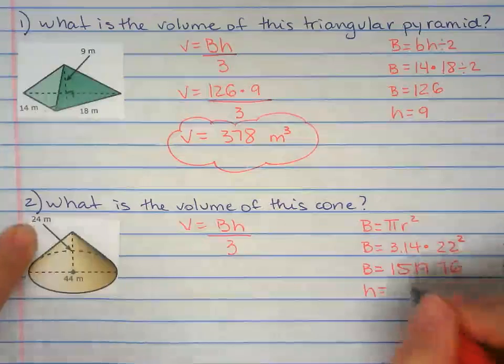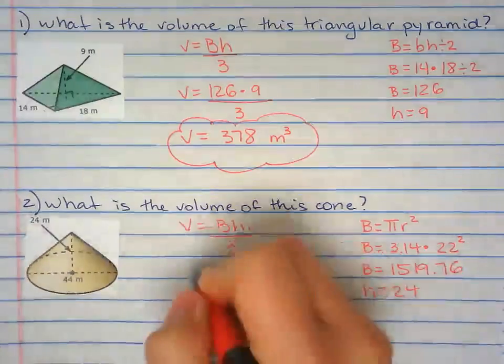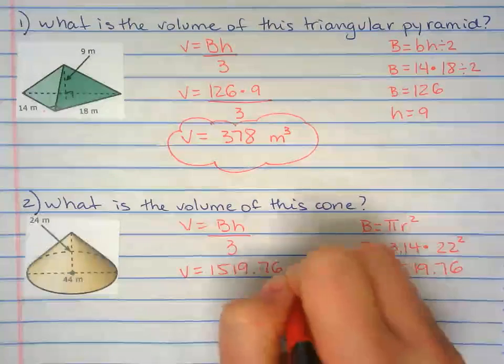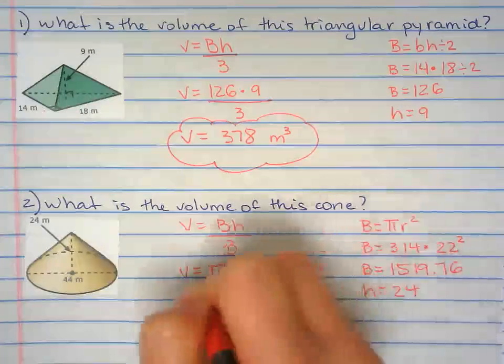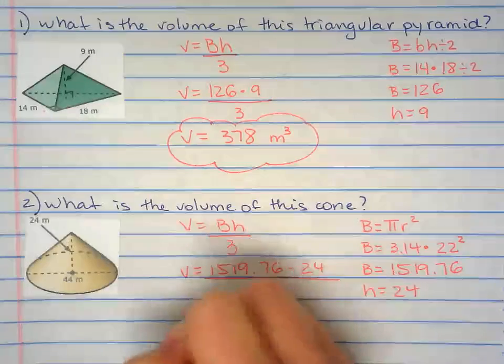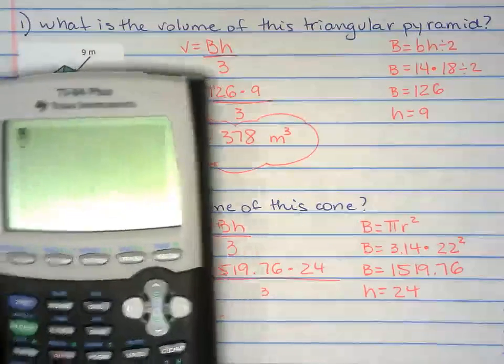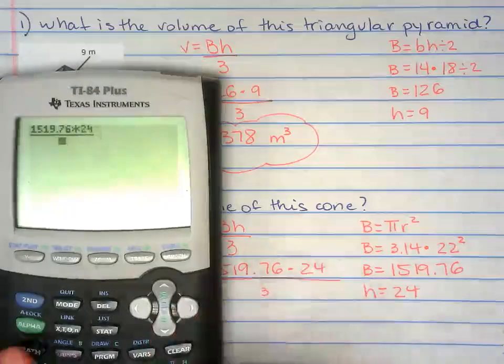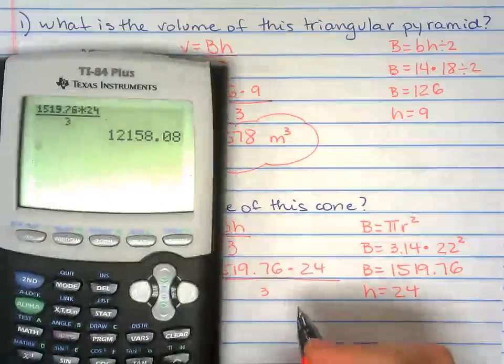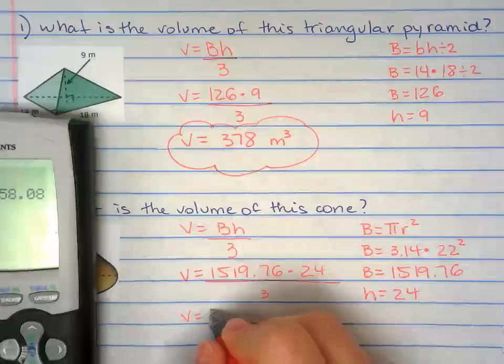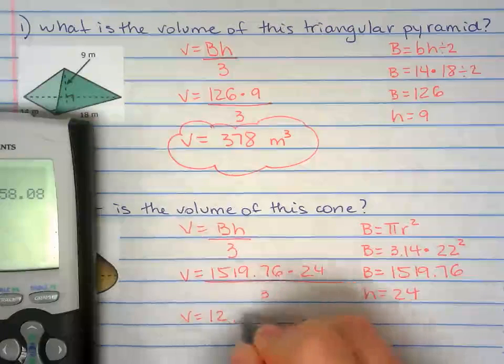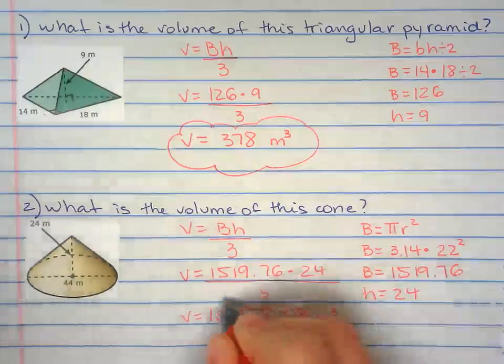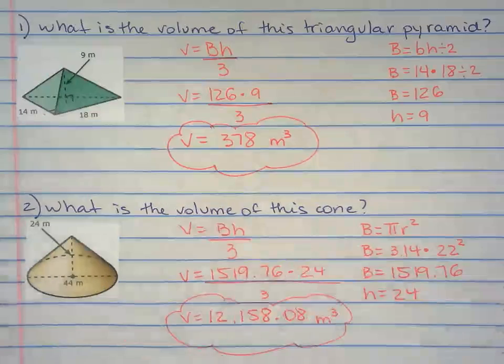Height is given right there 24. Plug it in. So the volume of the cone is 12,158.08 cubic meters. Cubic because we're talking volume.